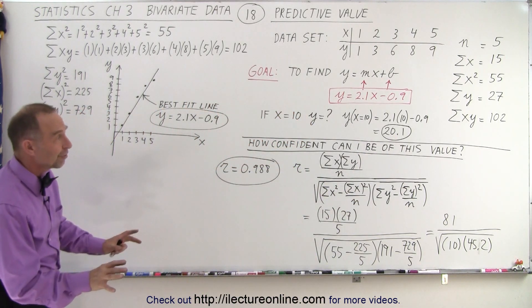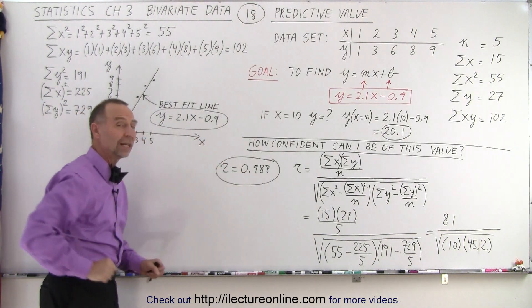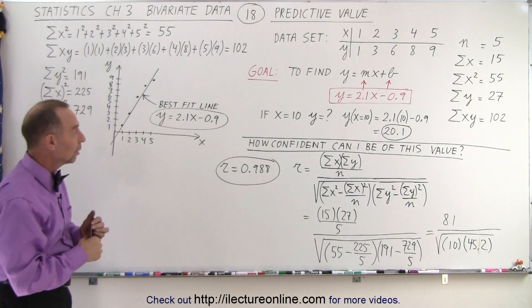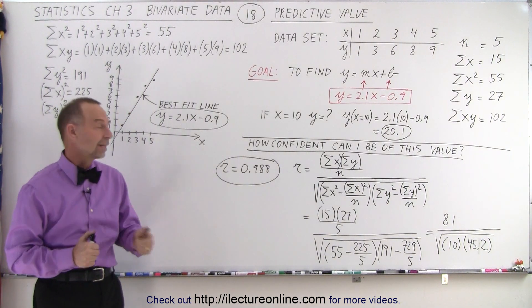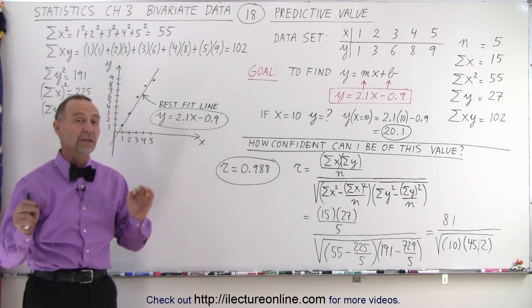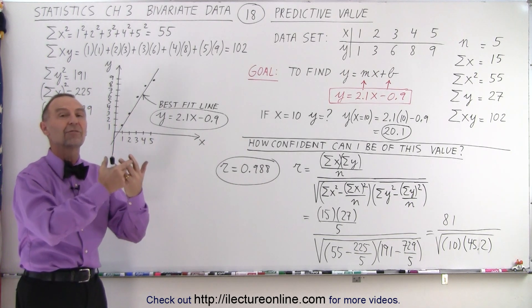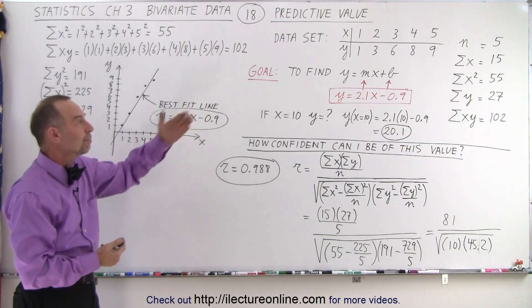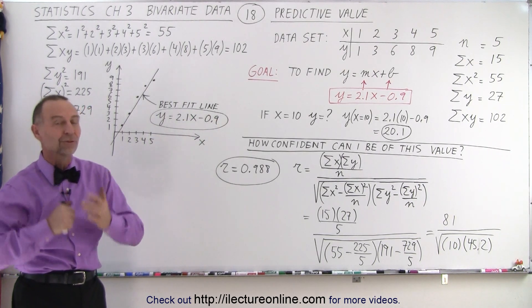Now, it may be a little bit different from that, but it'll be close because we have a very strong relationship, we have a very high correlation, and therefore, we're fairly confident that we found a good best fit line, and it gives us a very strong relationship between the x and the y values to make the predicted value for any input that we want to put into that particular equation. And that is how it's done.